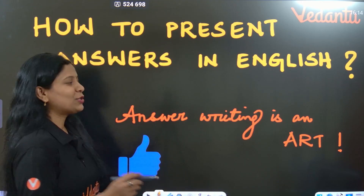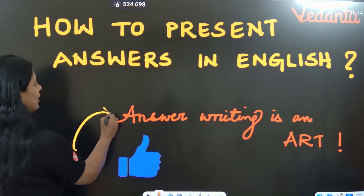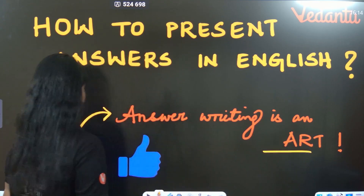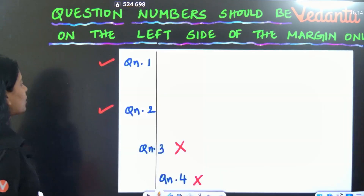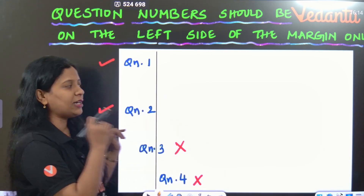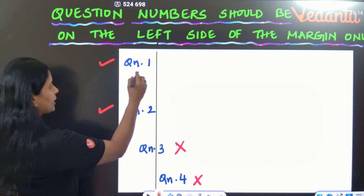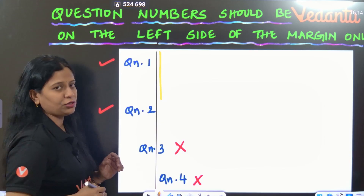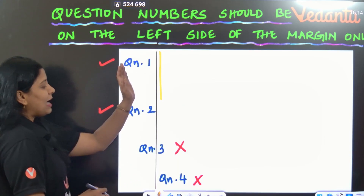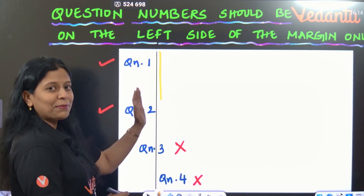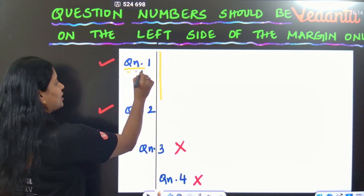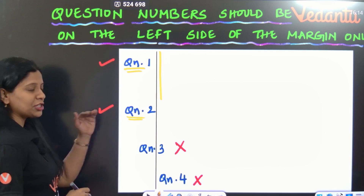Let's see how we can enhance this art of paper presentation. First, you have to take the answer booklet. In the booklet, first you have to draw a margin. After making a margin draw on the left side, you should write the question numbers — question number 1, question number 2 — to the left of the margin.